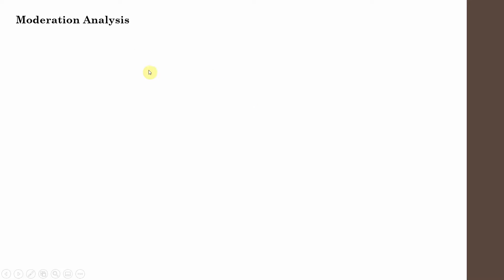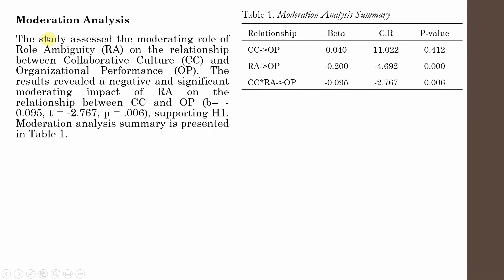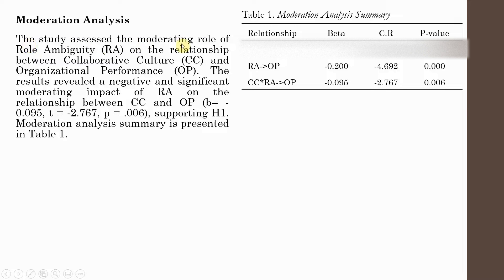How do we report the moderation analysis? The first thing is to explain what moderating role you are assessing and what relationship it is being assessed in. For example: the study assessed the moderating role of role ambiguity — your moderator — on the relationship between collaborative culture, the IV, and organizational performance, the DV.